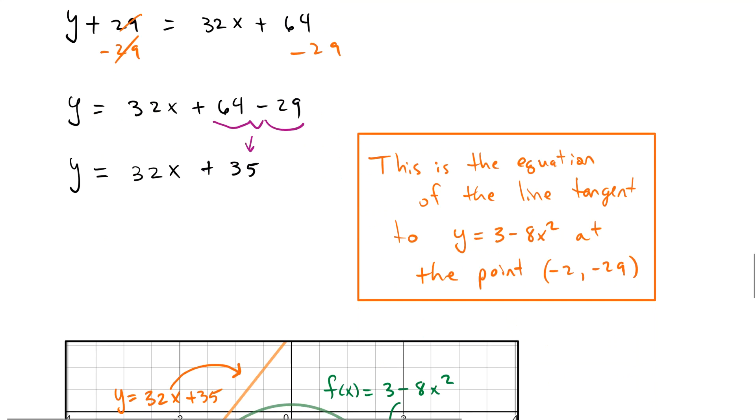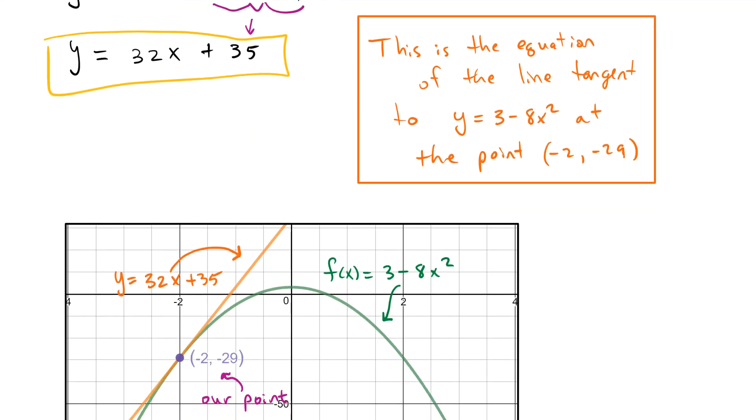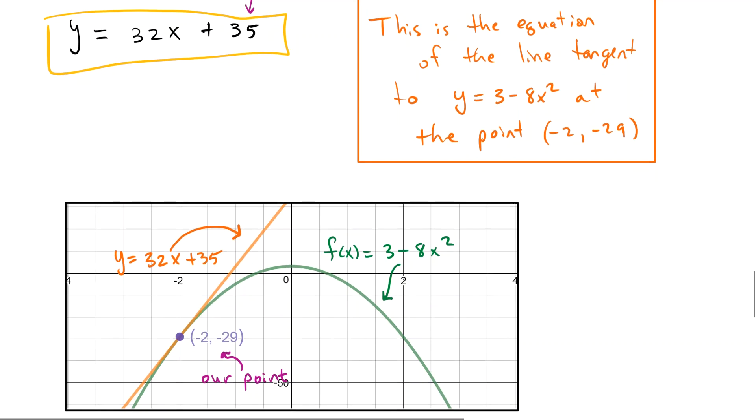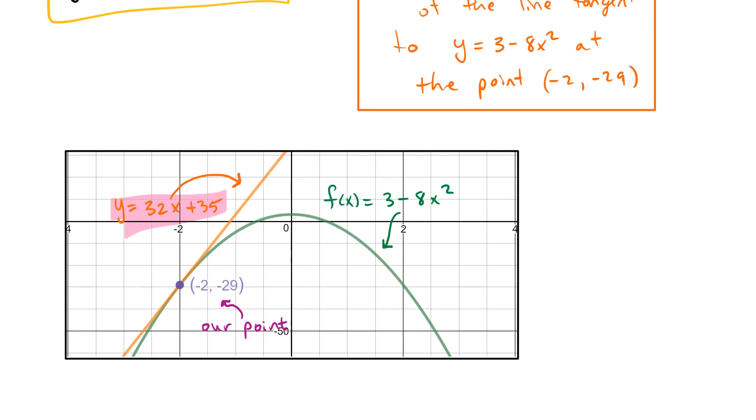And that leaves us with our answer. This is the equation of the line tangent to the curve y equals 3 minus 8x squared at the point negative 2, negative 29. So this is what we found. We found the equation of this orange line. Thanks for watching.